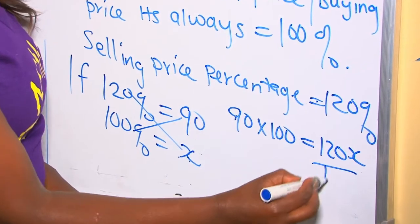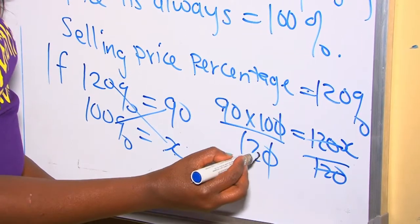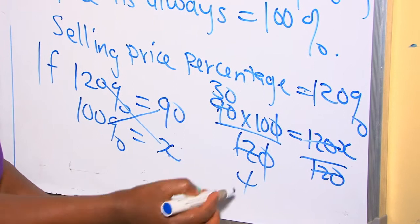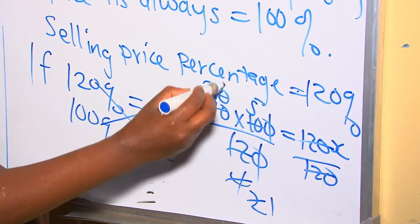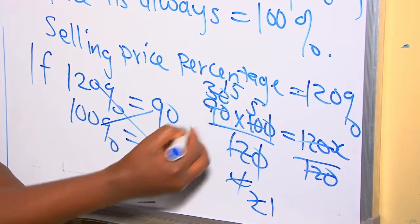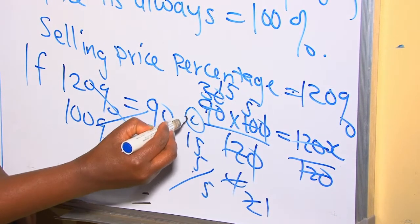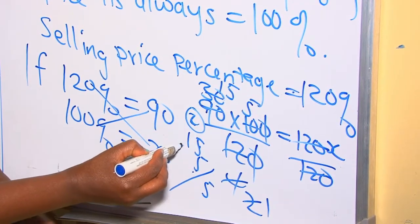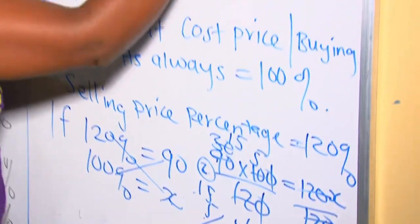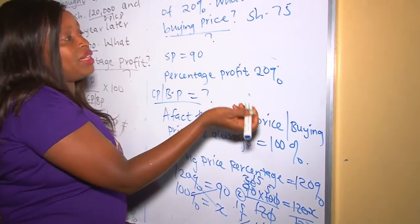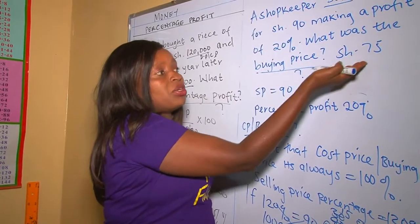We want X, so we divide both sides by 120. Simplifying step by step, we get our buying price is 75 shillings. That's why he was able to make a profit — he sold more than what he paid. The buying price was 75 shillings.